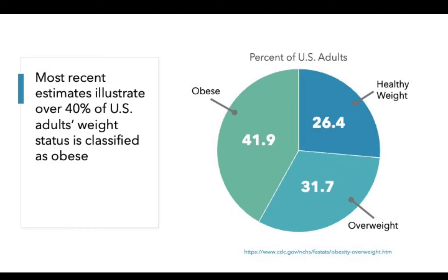The most recent estimates for obesity show that over 40% of U.S. adults' weight status is classified as obese. These data come from the CDC, which conducts annual surveillance of BMI and other health markers. As you can see in the pie chart on the right, approximately 26% of U.S. adults have a BMI classified as healthy or normal weight, approximately 31% have a BMI classified as overweight, and 42% have a BMI classified as obese. This prevalence of obesity is much higher than we've seen in the past few decades.